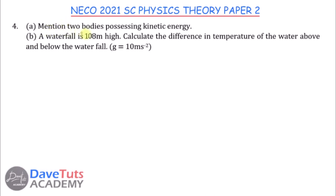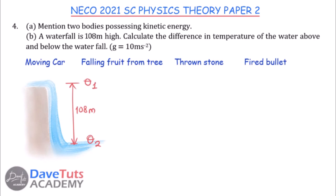We are asked to mention two bodies possessing kinetic energy. Any moving object possesses kinetic energy — for example, a moving car, a fruit falling from a tree, a stone that is thrown, or a bullet that is fired. Velocity accounts for this kinetic energy. Just mention any two.